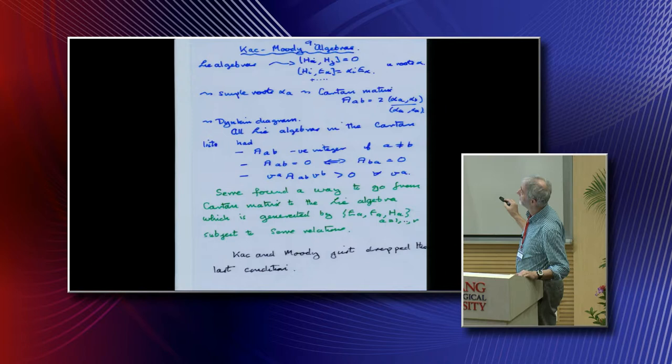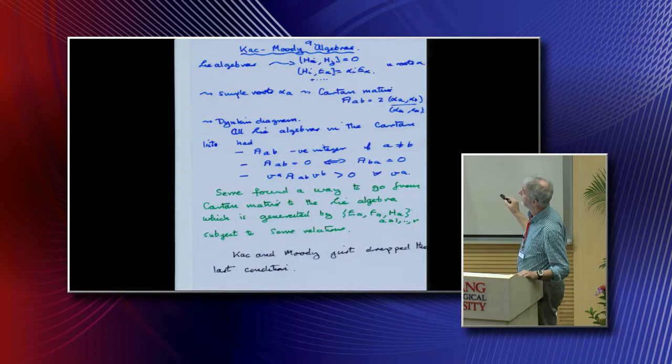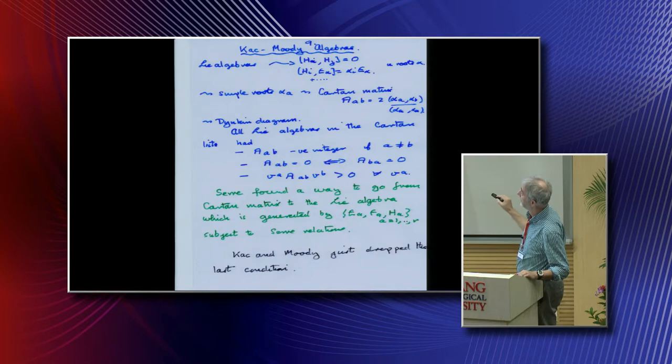The Lie algebra is characterized by these vectors, called the roots. Rather than talk about the roots, you can talk about a basis for the roots, called the simple roots. You can construct the scalar products of the roots and construct the Cartan matrix. You can draw a diagram which reconstructs the Cartan matrix.